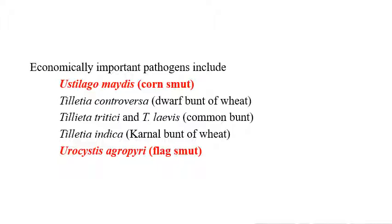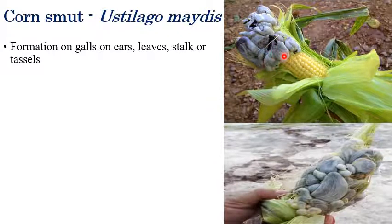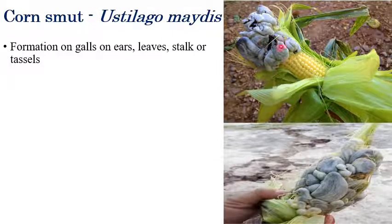We will see the most important one, corn smut, caused by Ustilago maydis. On the right side, we can see the diagrams showing formation of galls on ears, leaves, stalks, or tassels. These structures are replaced by gall-like substances, which are later converted into black color powdery masses, making the corn almost unfit for consumption.